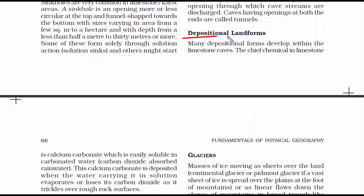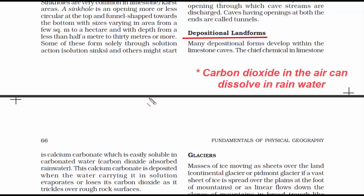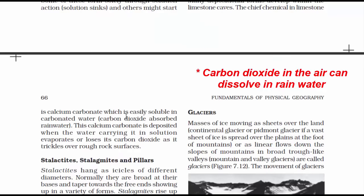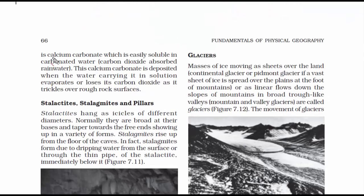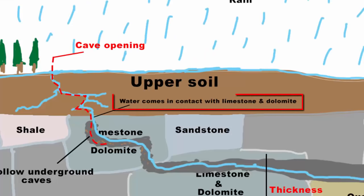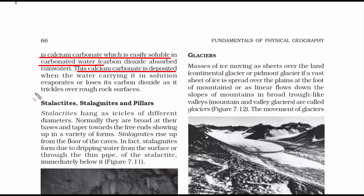Now we will read about some depositional landforms which occur due to running of groundwater. Groundwater is the rainwater that falls on the surface. This rainwater is carbonated water, meaning carbon dioxide-absorbed water. Limestone rocks contain calcium carbonate, which is easily soluble in carbonated water. When water flows through limestone rocks, it erodes calcium carbonate and carries it along. These eroded calcium carbonate deposits will settle somewhere because at some point water will evaporate as it moves through rocks and mud surface, forming depositional structures.